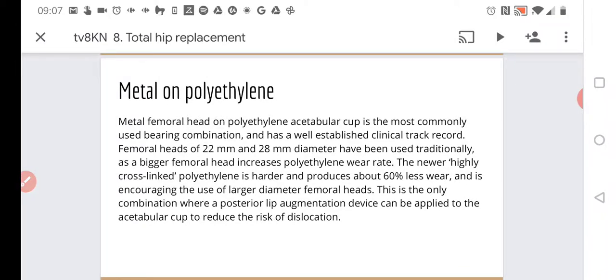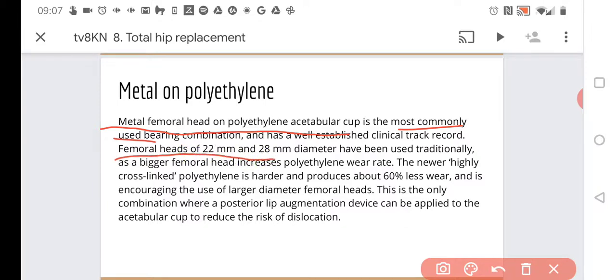So what possibilities do we have? Metal on polyethylene. The more traditional one. We have the metal femoral head and polyethylene acetabular cup. Generally it's the most commonly used and has well established clinical track records. Femoral heads of 22 and 28 mm diameter have been used. As a bigger femoral head increases polyethylene wear rate, the newly highly cross-linked polyethylene is harder and produces about 60% less wear.